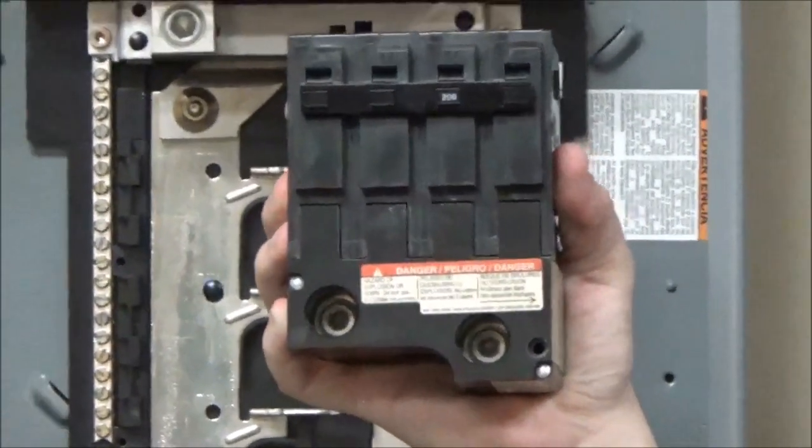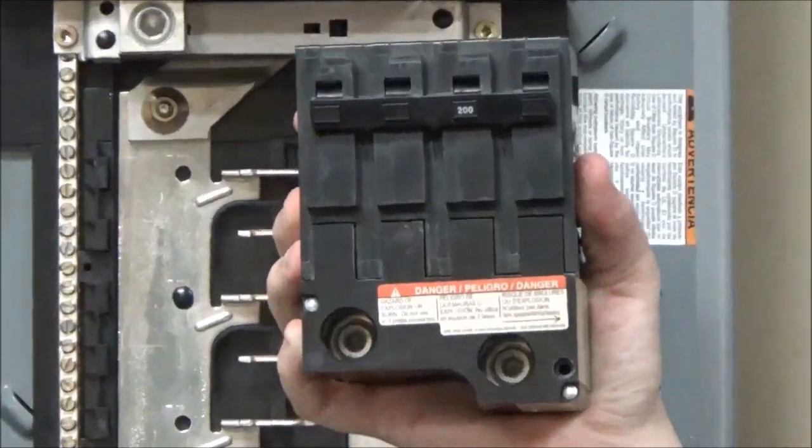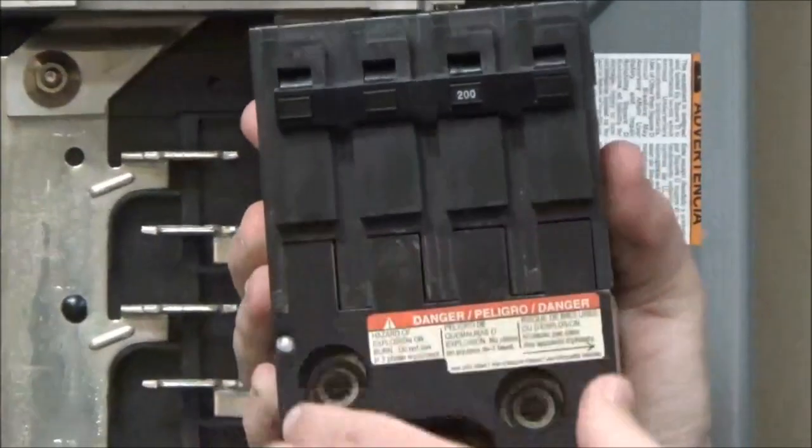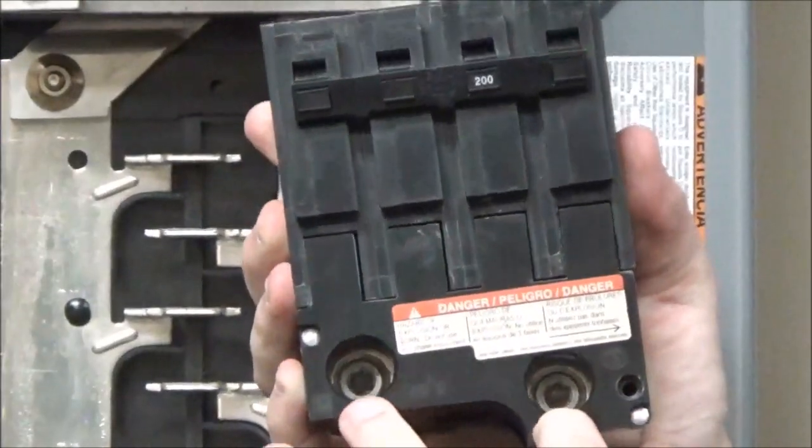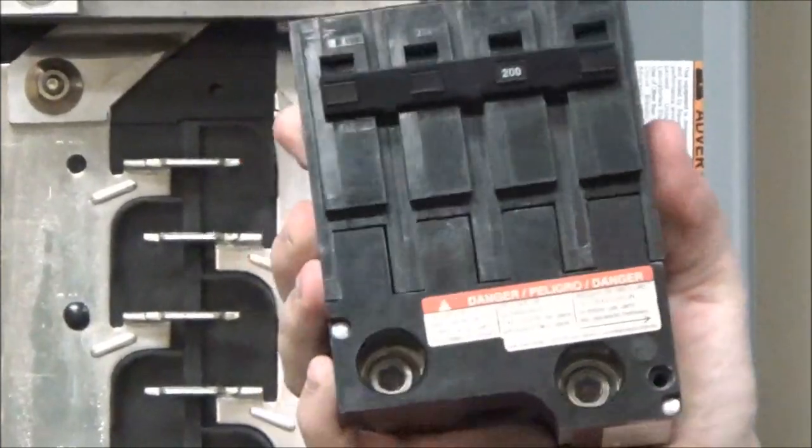This one is the BB, which stands for branch breaker. You will see that it does have the bracket here that comes with just the two screws to wire out of the two-pole breaker.